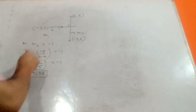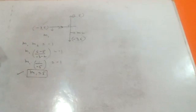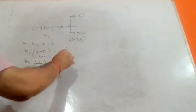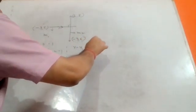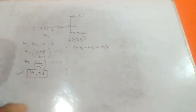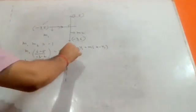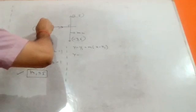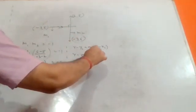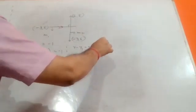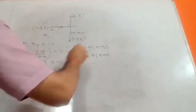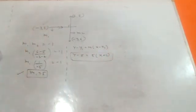So the slope of our required line is found, and the point minus three comma five is also known. Using point-slope form y minus y1 equals m times (x minus x1): y minus 5 equals 5 times (x minus (minus 3)), which gives y minus 5 equals 5 times (x plus 3). This is the required equation.